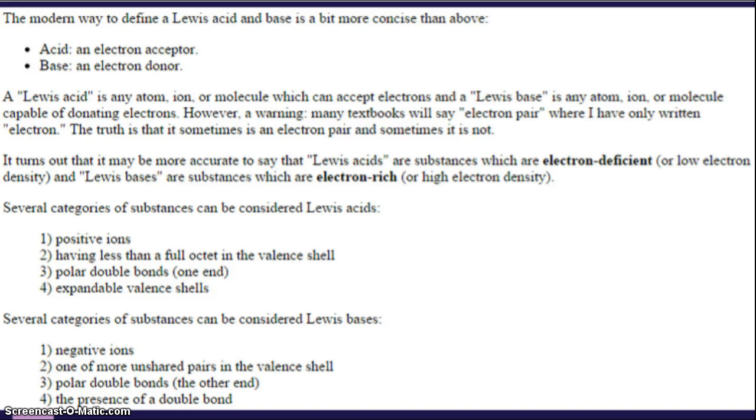A Lewis acid is any atom, ion, or molecule which can accept electrons, and a Lewis base is any atom, ion, or molecule capable of donating electrons. However, a warning. Many textbooks will say electron pair, where I have only written electron. The truth is that sometimes it's an electron pair, and sometimes it's just one electron. You don't have to worry about that. I'm not going to try and trick you on that. This is the main idea for Lewis.